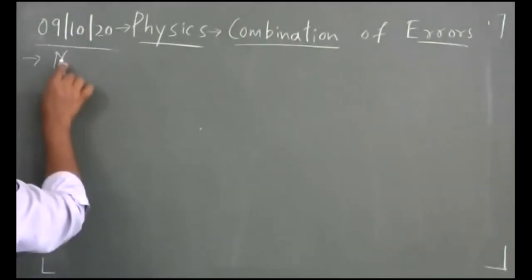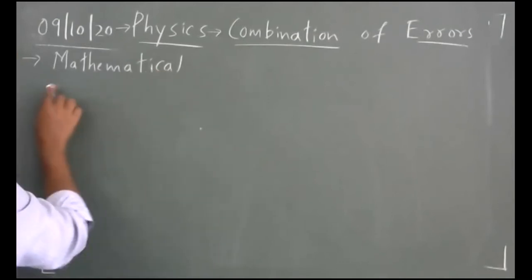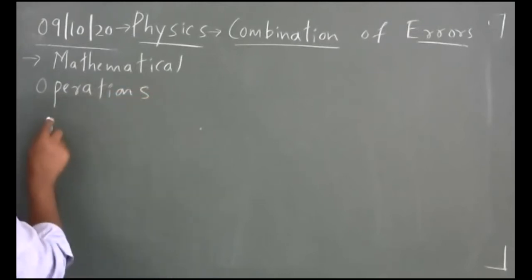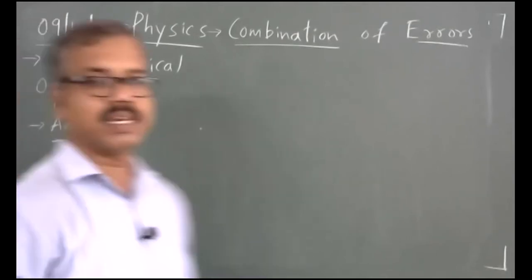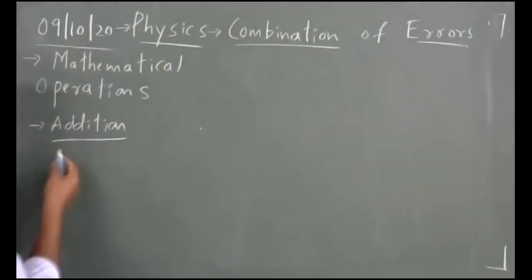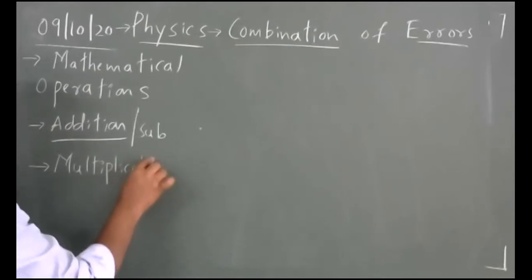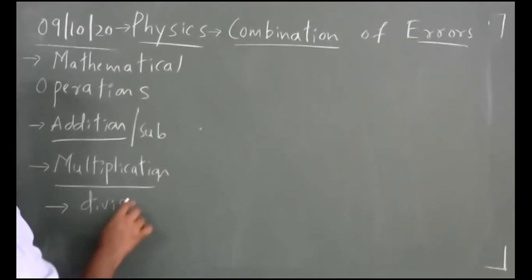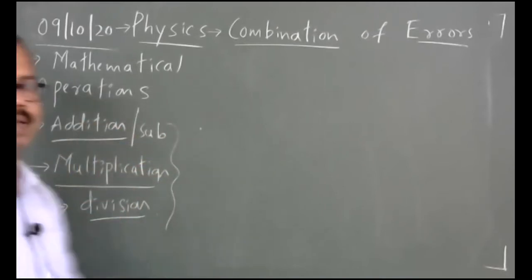What are the mathematical operations? We know that we call them mathematical operations. We have addition, subtraction, multiplication, and division. How these mathematical operations will give us error — how errors combine.